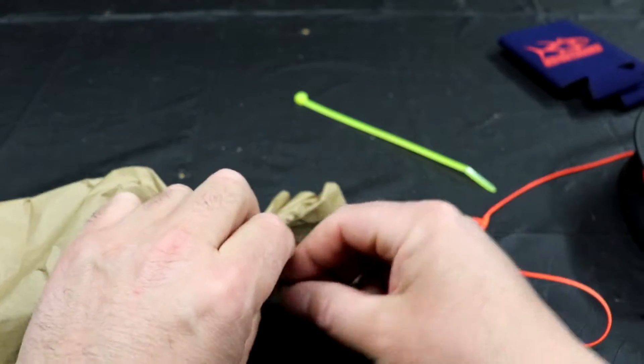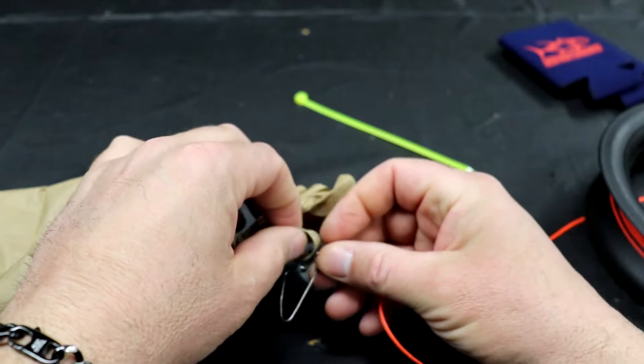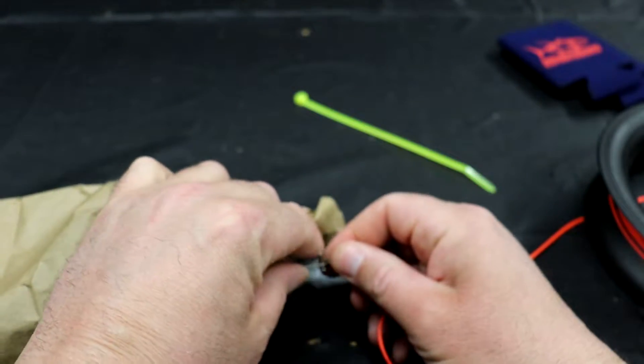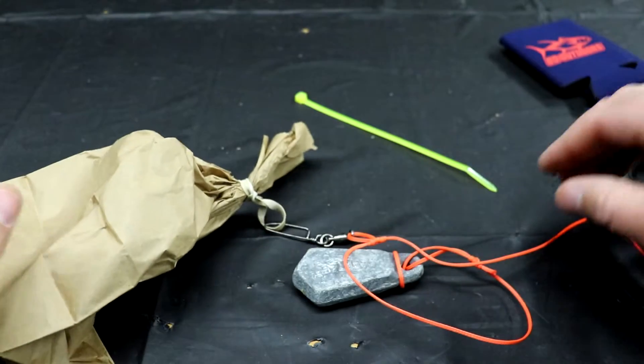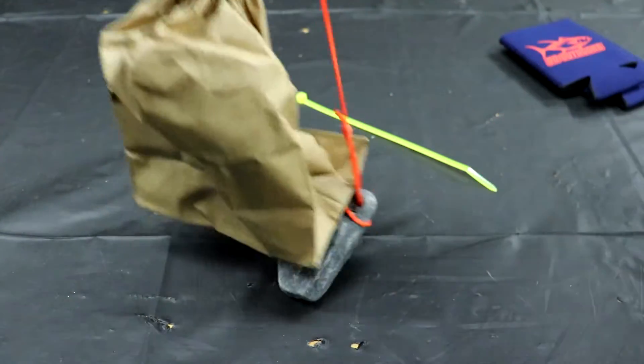And then simply open up your snap swivel here, pop your rubber band in there and close it shut. That's basically what it's gonna look like.